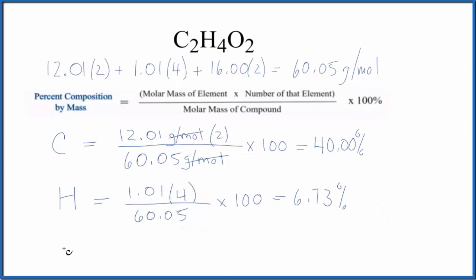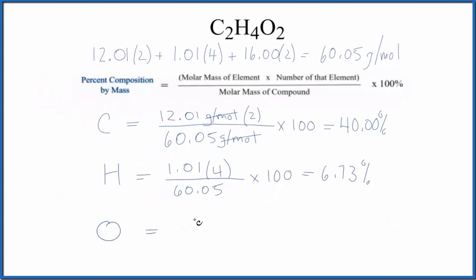For the oxygen, we do the same thing. Oxygen on the periodic table: 16.00 grams per mole. Two oxygens, that's the number of the element. Divide by the molar mass of the compound, multiply by one hundred, and we end up with 53.29 percent. So these numbers should be very close when we add these up.